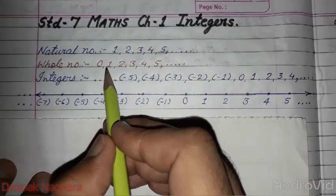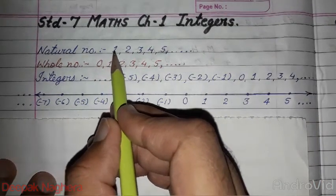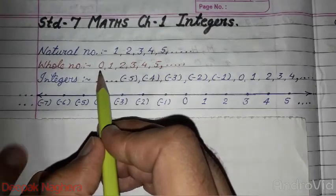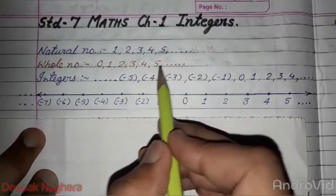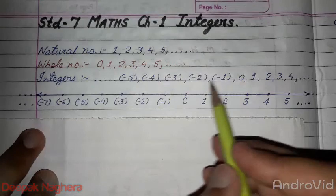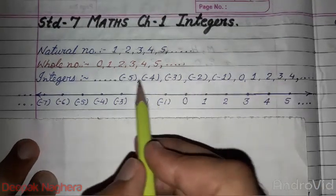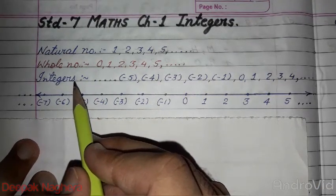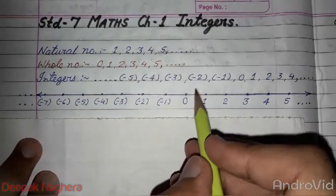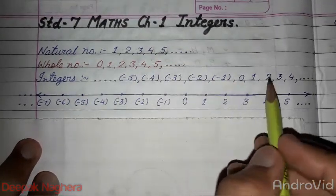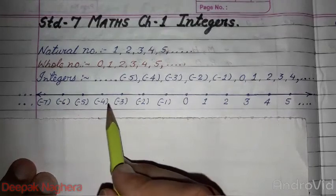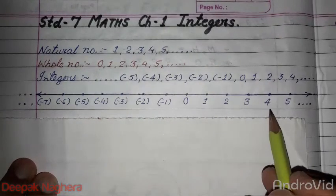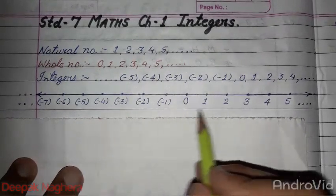So we cannot find the smallest integer or the greatest integer. There was one possibility that we had the smallest natural number and smallest whole number, but not the greatest. Here, neither the greatest nor the smallest is possible.